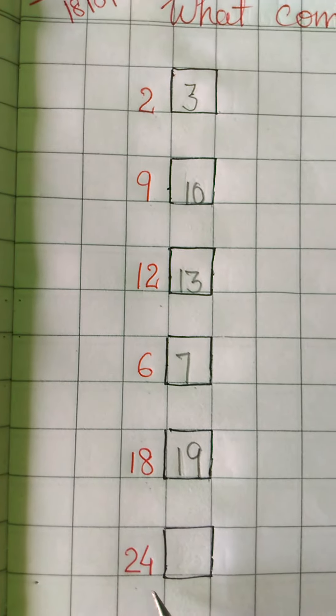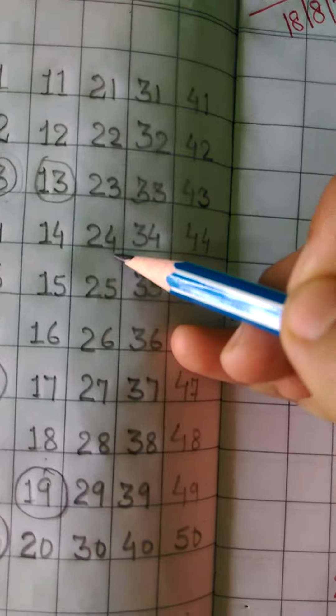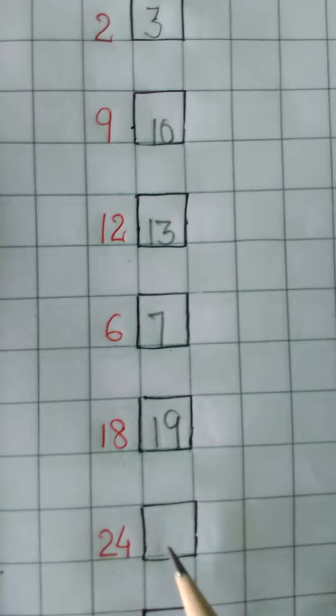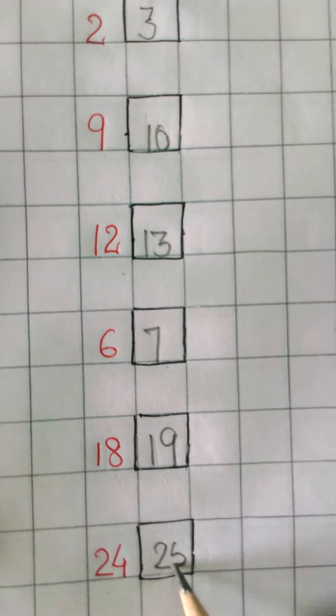Next is 24. Again we will check what comes after 24. 25. So in the box we have to write 25.